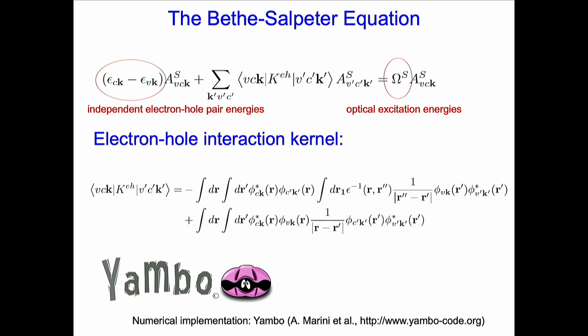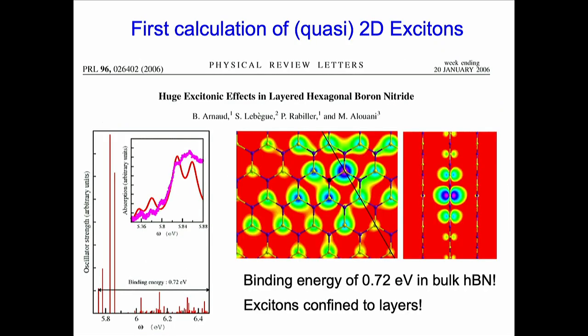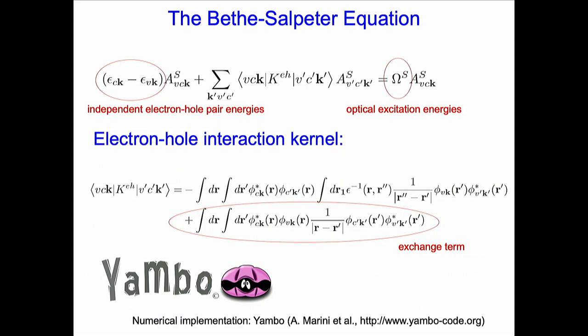We really want to use Jumbo and solve the full Bethe-Salpeter equation as explained earlier. We solve for the optical excitation energies, which are a superposition of many different electron-hole pair transitions mixed by the excitonic eigenvectors A_{v,c,k}, labeled with the exciton index S.